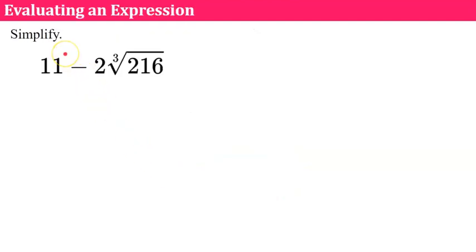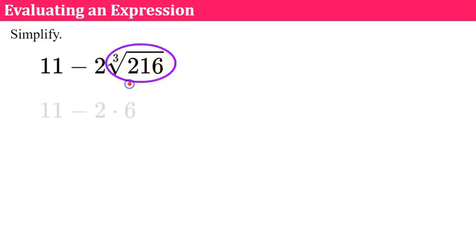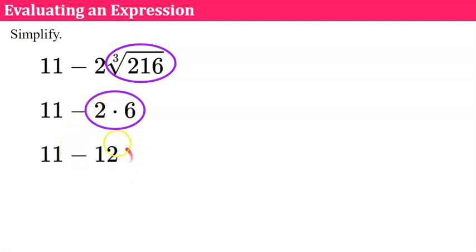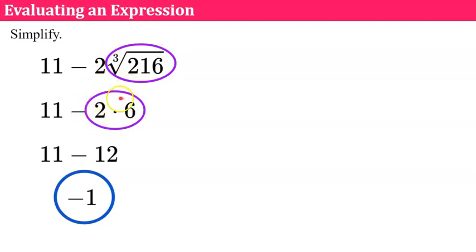Now let's talk about evaluating expressions. Just like with square roots, cube roots fall under PEMDAS under the exponent (E). So we clear the cube root before doing any other operation. First, find the cube root of 216, which is 6, since 6 times 6 times 6 is 216. Then multiply: 2 times 6 is 12. Then subtract last, giving negative 1. Remember order of operations: clear exponents first — cube roots and square roots fall under exponents — then multiply or divide left to right, then add or subtract last.